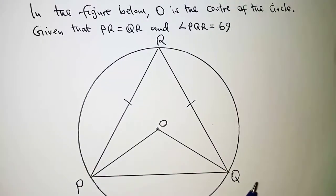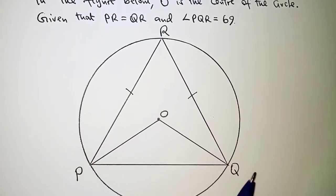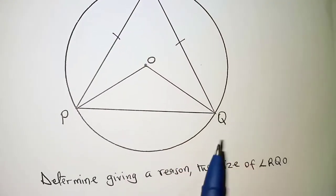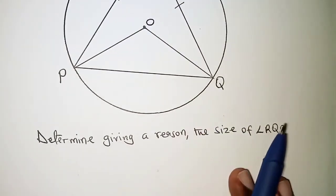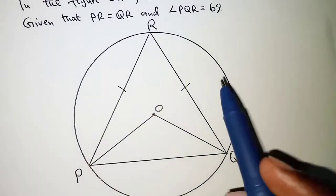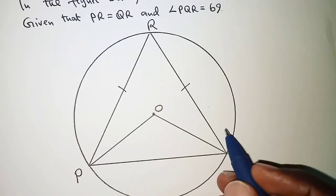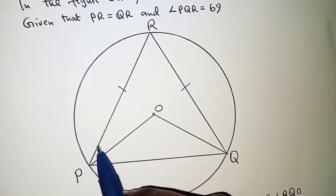So in this question, before we determine angle RQO, it's important that we just determine all the possible angles we are able to see.